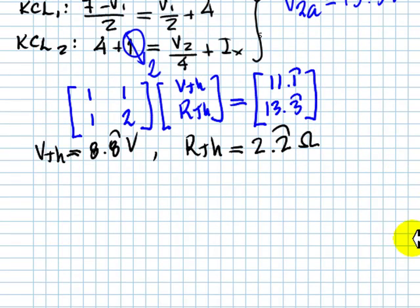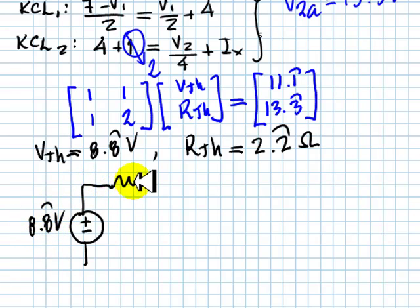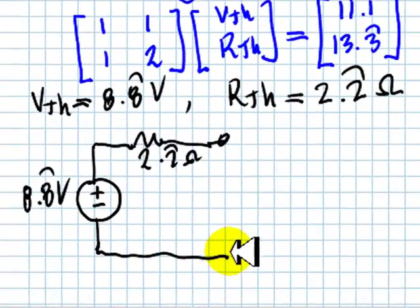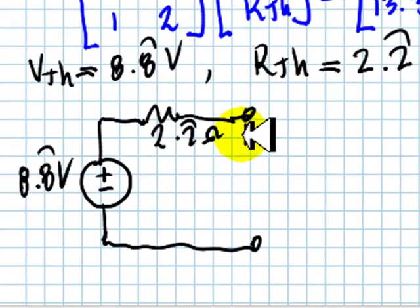To complete the exercise, we need to draw the equivalent circuit with the V Thevenin right side up, 8.8 periodic volts, and R Thevenin, which is 2.2 periodic ohms. That is the equivalent circuit at port PQ for the network in the exercise.